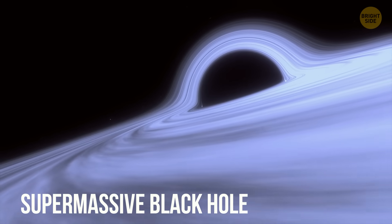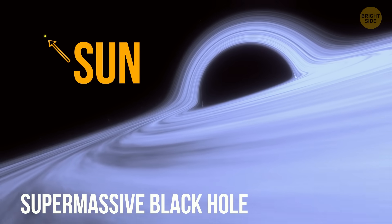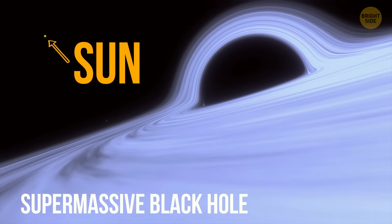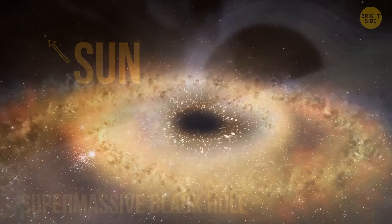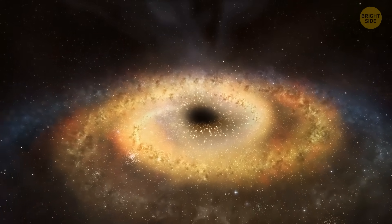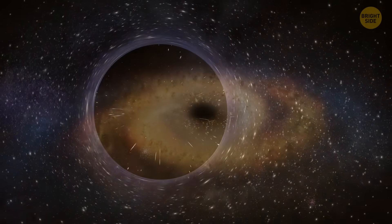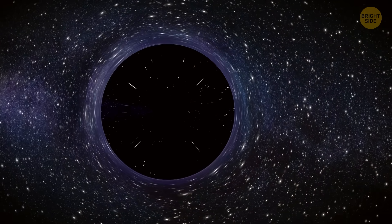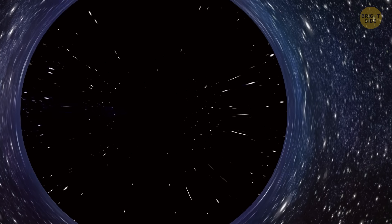Supermassive black holes, hundreds of thousands to billions of times the mass of our sun, are often found at the centers of galaxies. Most of them stay put or move at a very slow pace. But the newly discovered black hole is much weirder than anything we've seen before.